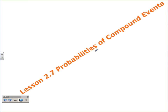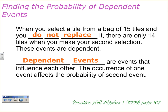Welcome to another math lesson. This is Mr. Pye. Today we're going to be looking at probabilities of compound events, specifically dependent events. We'll be working out of Prentice Hall Algebra 1, Copyright 2009, and this is Lesson 2-7: Finding the probability of dependent events.